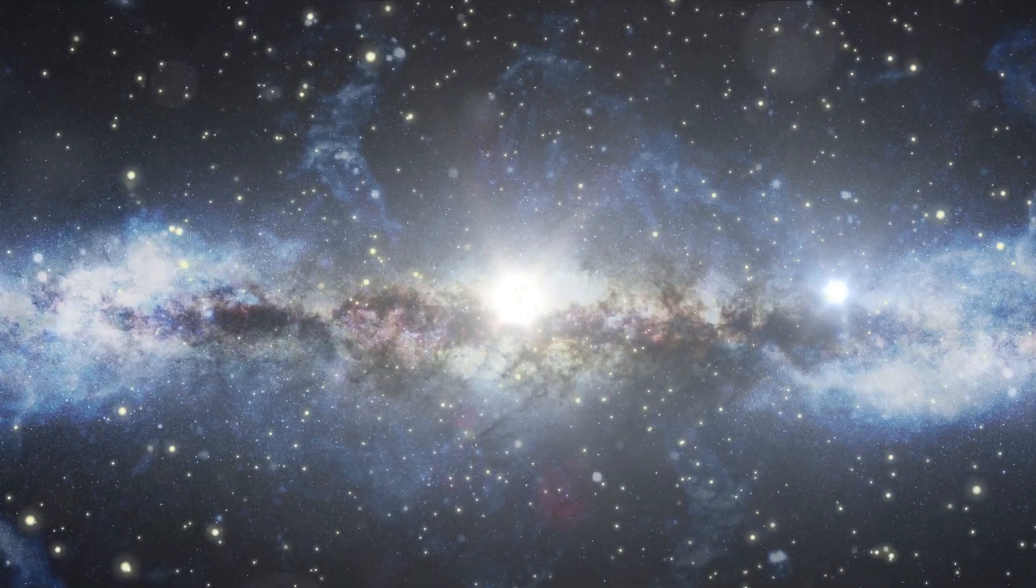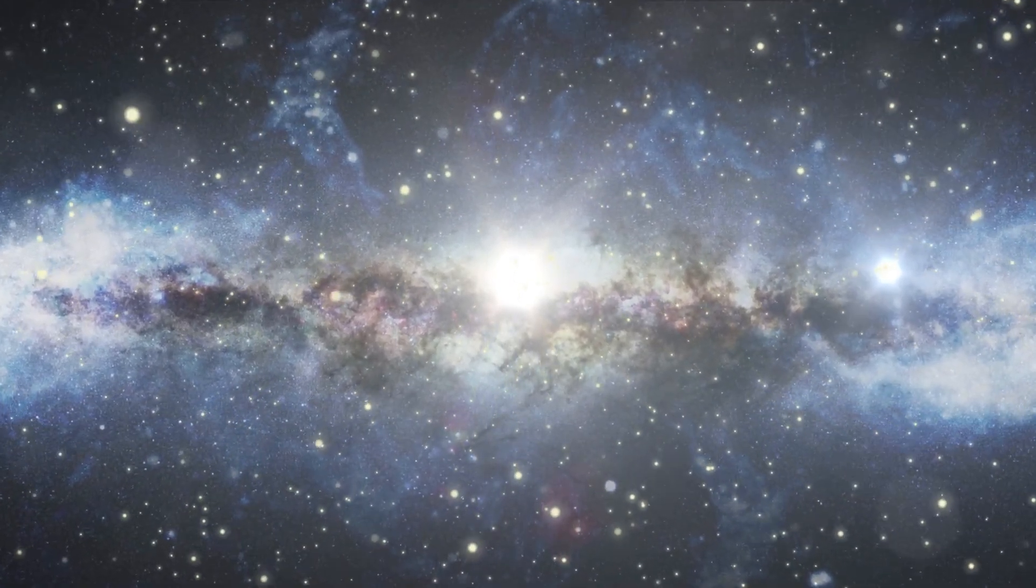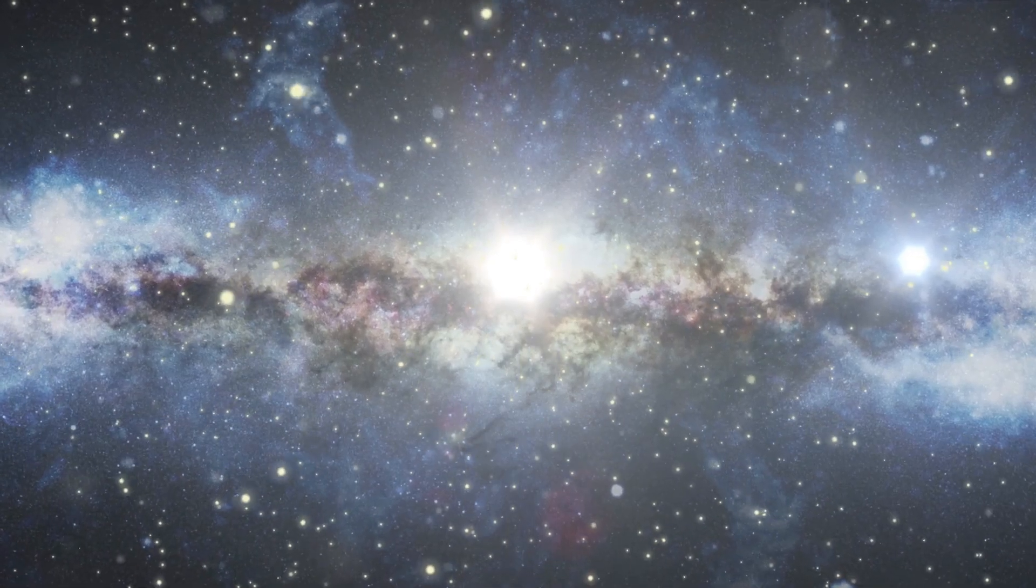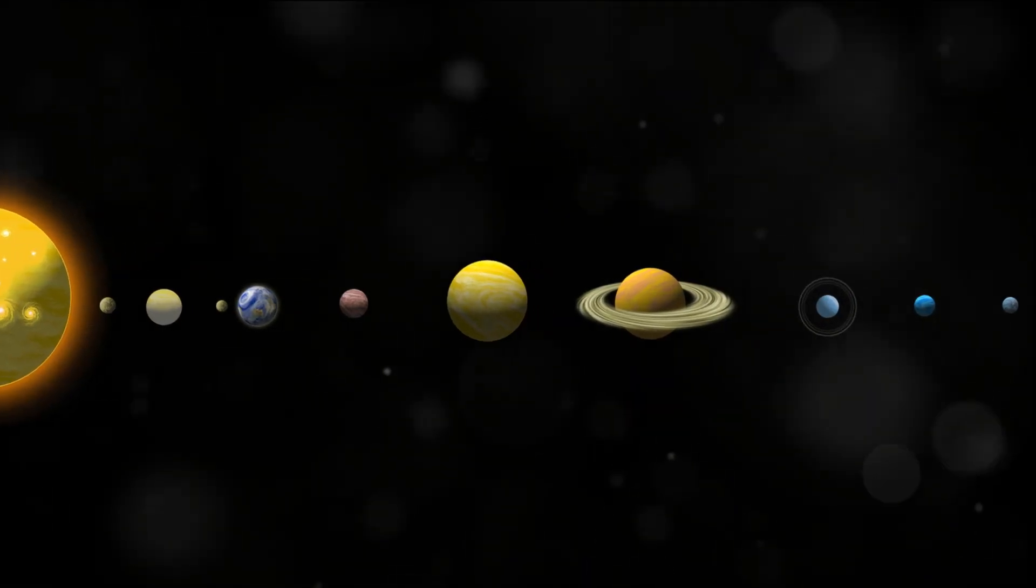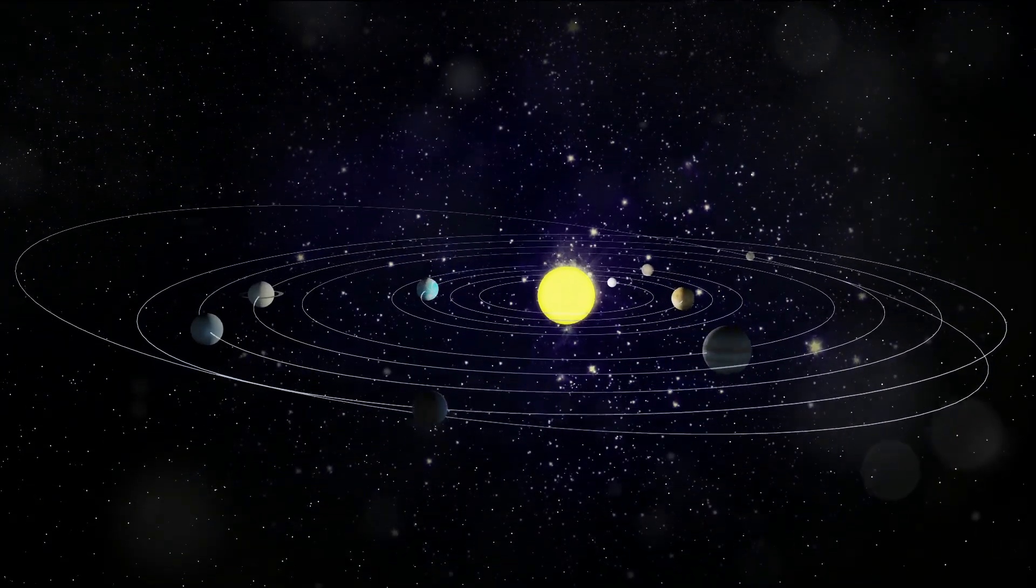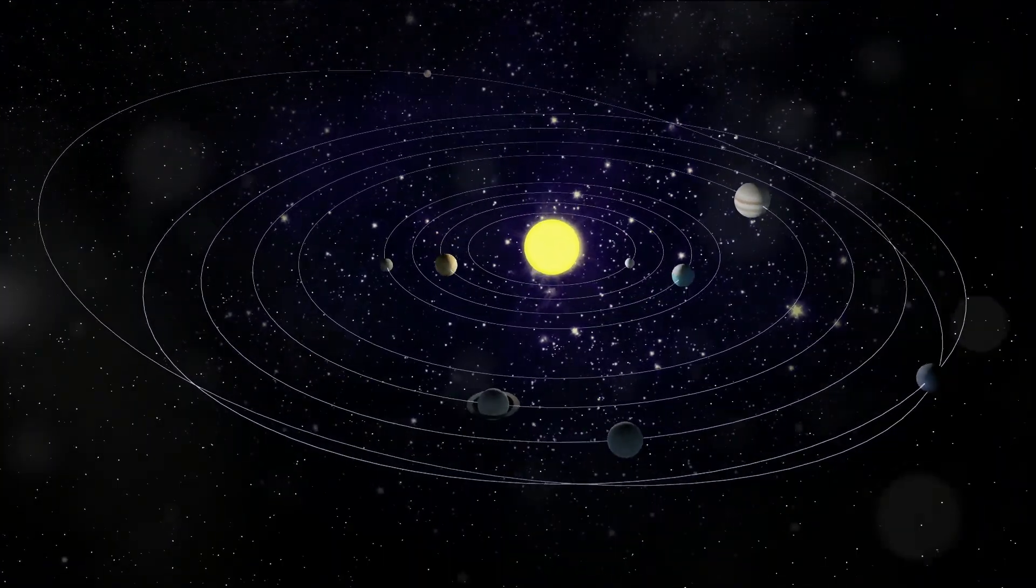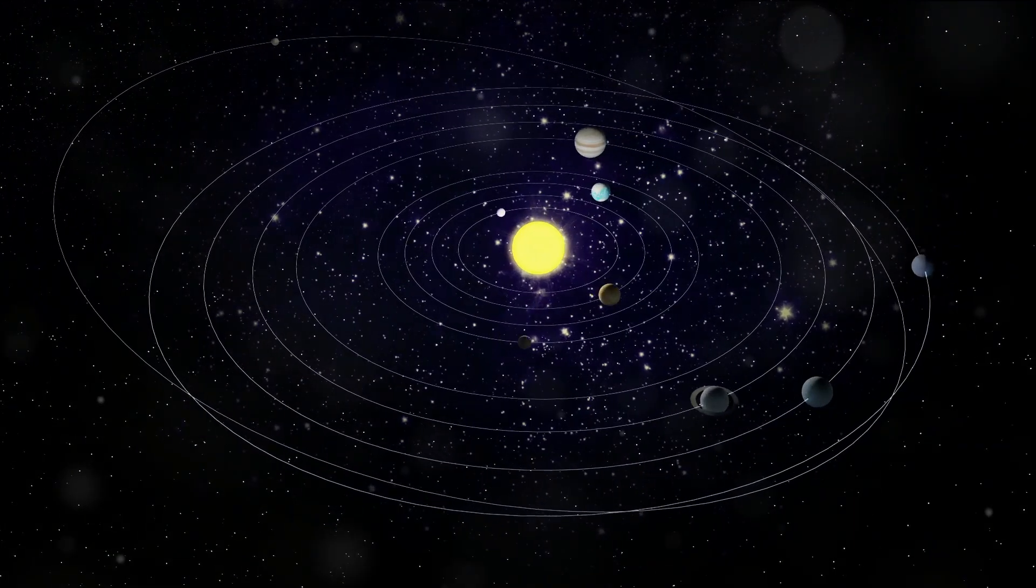In the grand scheme of the universe, human existence is but a blink. Now let's pause for a moment and contemplate the enormity of that statement. The universe is an ancient entity, its age stretching back over 13 billion years. Our solar system, merely a youngster in comparison, has been in existence for about 4.5 billion years.